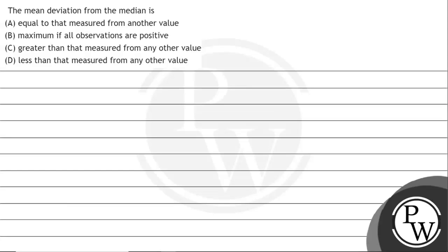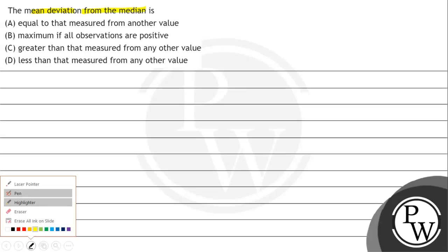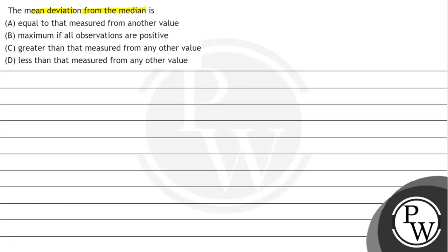Hello, let's read the question. The question says that mean deviation from the median is — A, B, C, D options given हमारे पास.